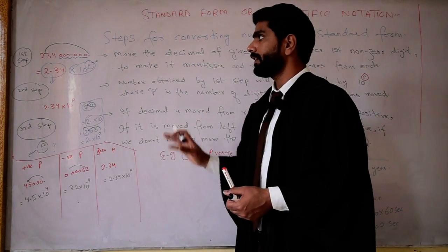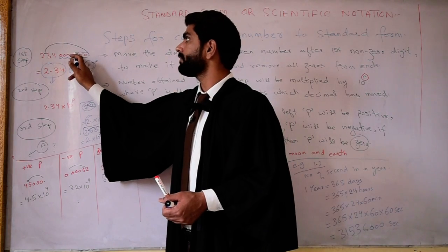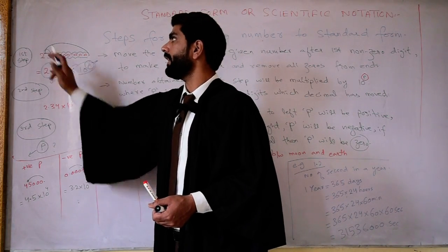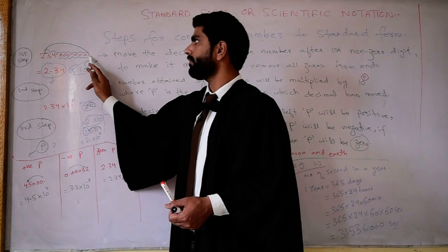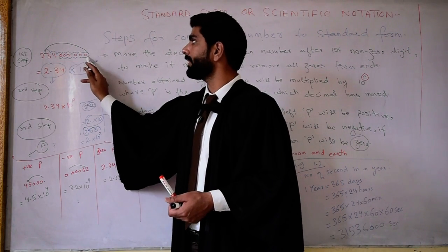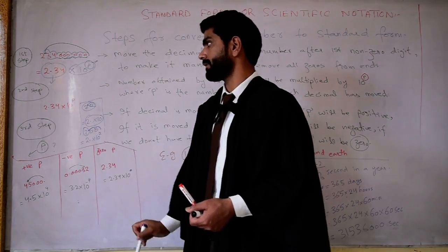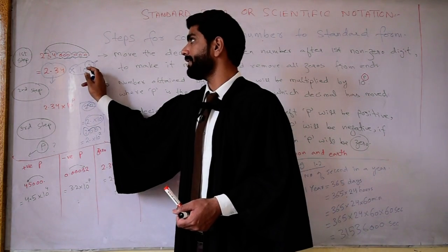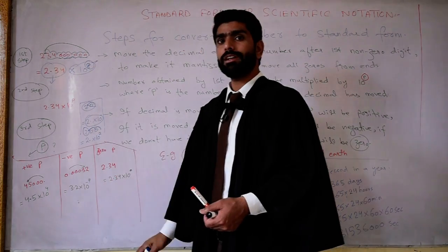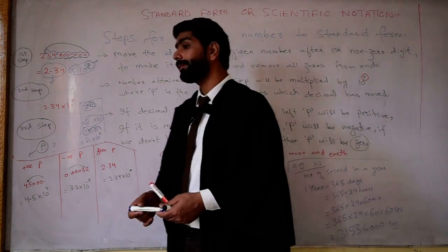In this case, counting 1, 2, 3, 4, 5, 6, 7, 8 — we have to move the decimal 8 digits in order to place it after the first non-zero digit. So p will be 8. This is the second step.